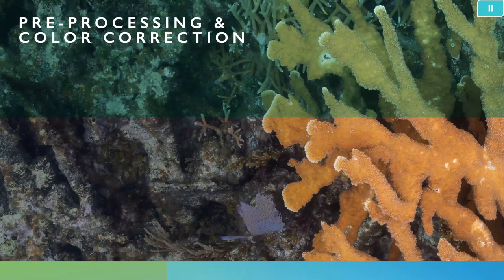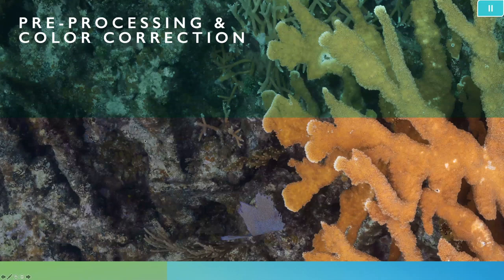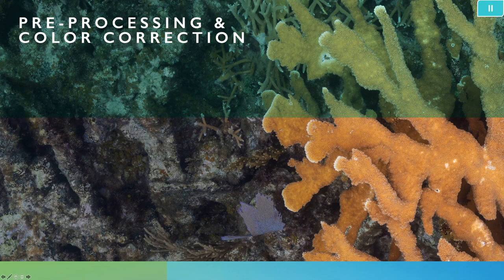Once we've taken the photos, we bring them into software to correct the color and remove distortion — typically Adobe Photoshop or Lightroom. Areas that are supposed to be white or neutral colored actually appear with a blue tint underwater, so we calibrate the white balance from one of the photos and then apply that adjustment to all of the photographs. I've also experimented a little bit with removing camera distortion introduced by the lens itself in order to create more accurate models, though the scientific nature of that correction process is something I'm still working on.